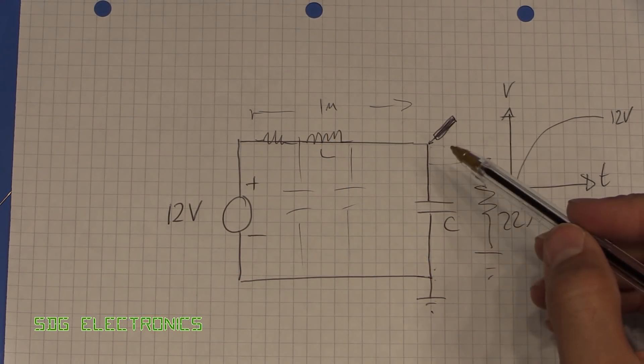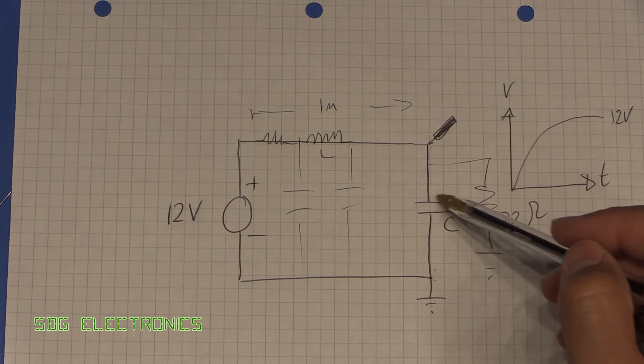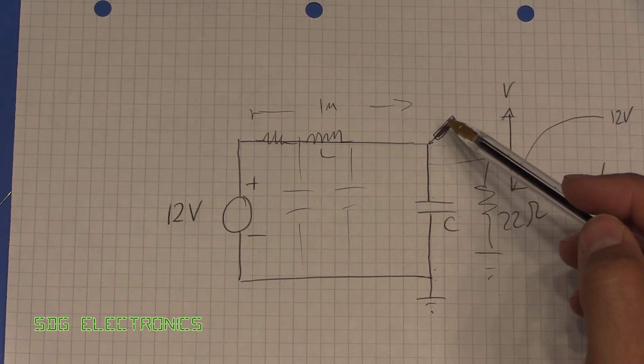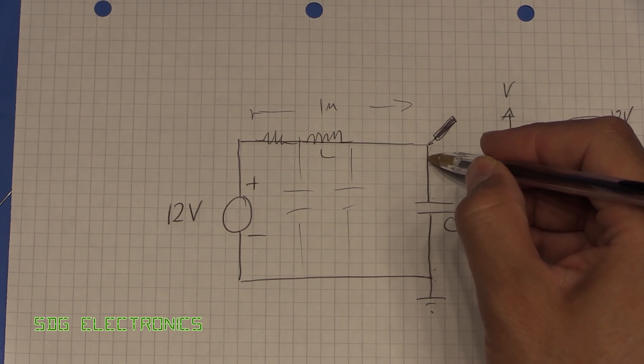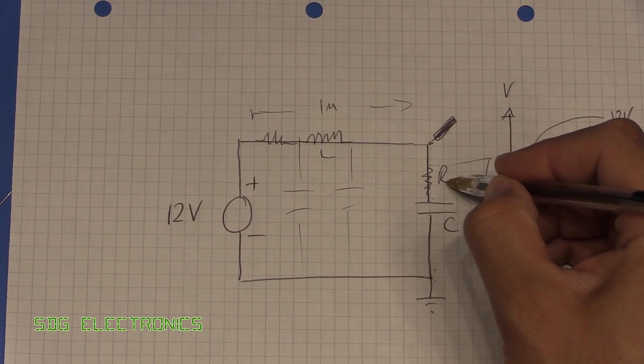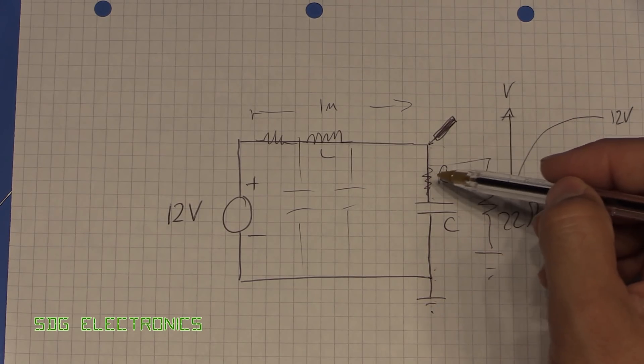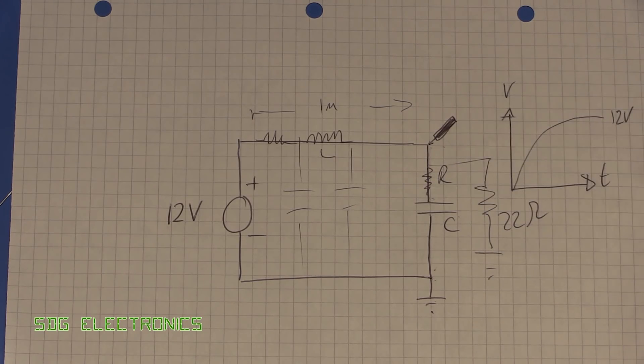To try and combat this, what we actually need to do is limit the current through the capacitor so that we don't see such a high peak current, and thus we don't see such a high peak voltage when the capacitor is charged up. Basically, the simplest way we can do this is by adding some resistance in here, as much as we can get away with without affecting our electronics, but enough to dampen the effect of the increased current.